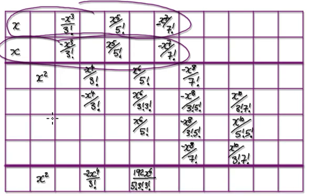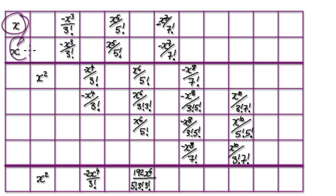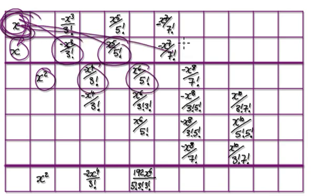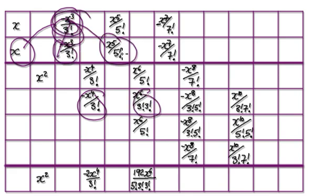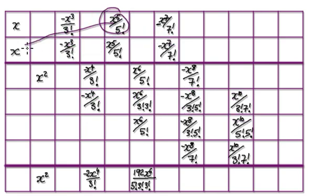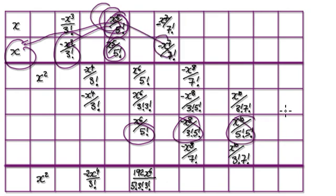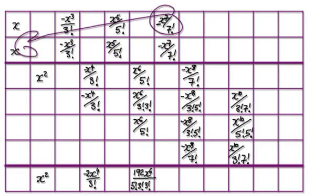So that would then give you this times this, that would then give you this. This times this, that would then give you this. This times this, that would then give you this. This times this, that would then give you this. And then it would be this times this, that would then give you this. This times this, that would then give you this. This times this, that would then give you this. And then it will be this times this, that will then give you this. This times this, that will then give you this. This times this, that will then give you this. This times this is beyond — forget about, beyond this bit here. And then it will be this times this, that will then give you this. This times this, that will then give you this.